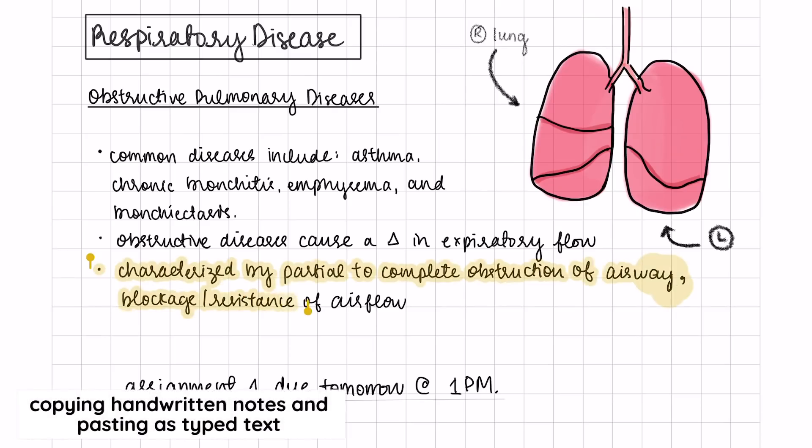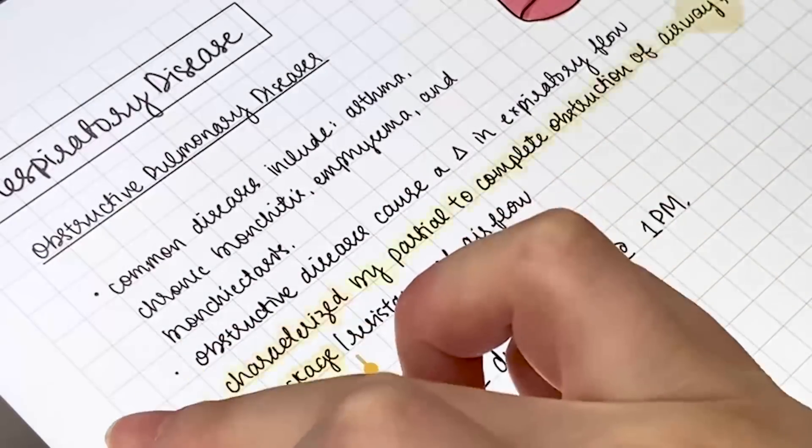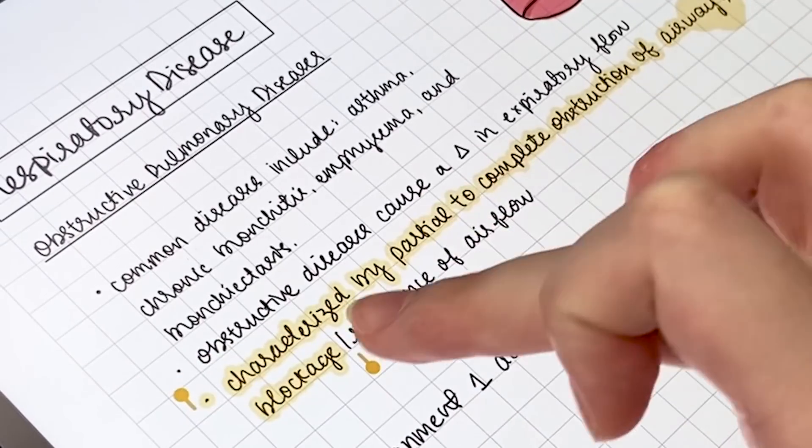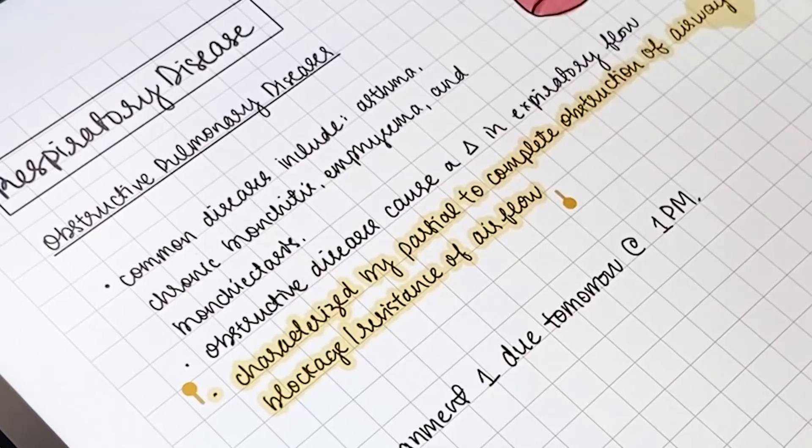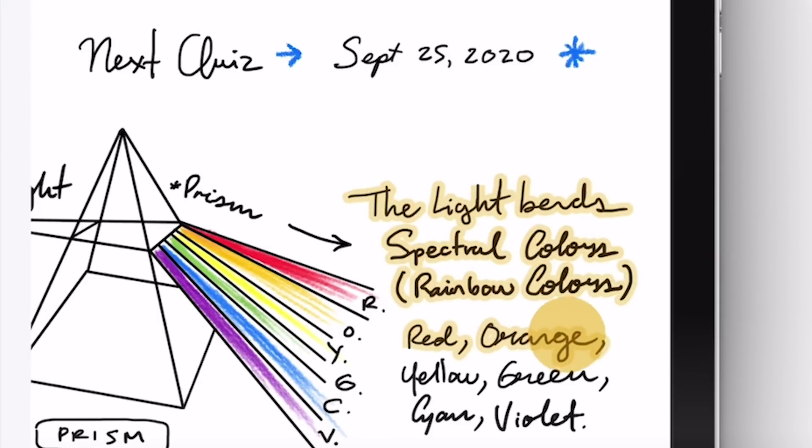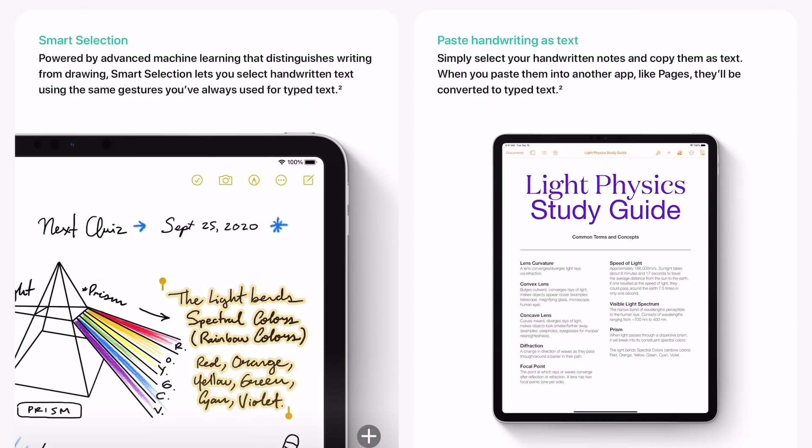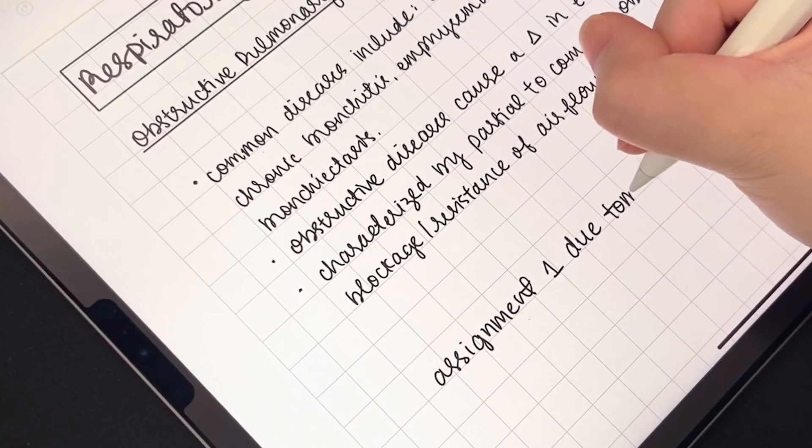New to iPadOS 14 is the ability of the iPad to recognize your handwriting and allow you to work with it like typed text. Instead of using a lasso tool to select your text, you can simply tap on it and you'll be able to select the notes of your choice. This feature is neat because it can actually tell your notes apart from your drawings, so your drawings won't be selected. You can copy the handwritten notes and paste it as typed text in something like Google Docs or Pages, so your handwriting now is pretty much as powerful as typed text.